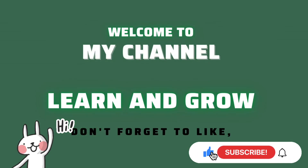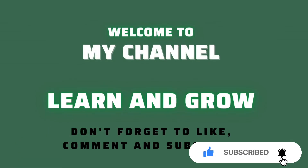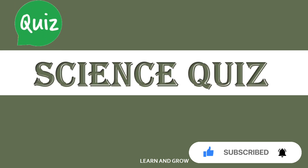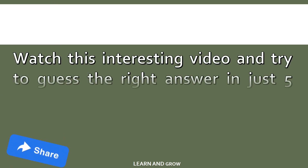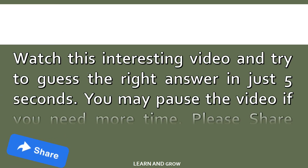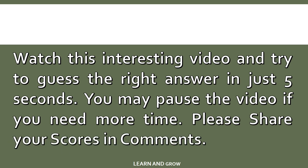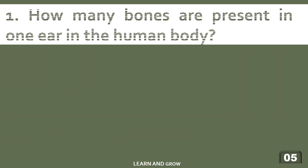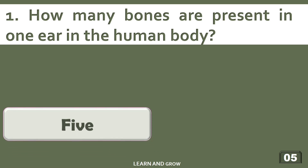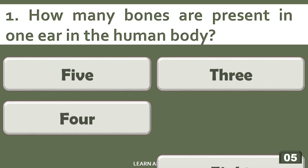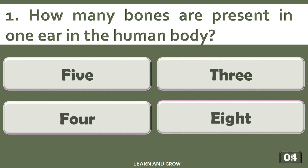Hey guys, welcome to my channel Learn and Grow. Watch this interesting video and try to guess the right answer in just five seconds — you may pause the video if you need more time. Please share your scores in the comments and subscribe to our YouTube channel. How many bones are present in one ear in the human body? Options are: A) 5, B) 3, C) 4, or D) 8.